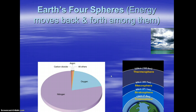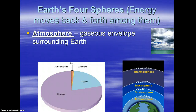Okay, our next section in our notes — now that you know what Earth's system science is and that there are open and closed systems — are the four spheres. There are actually more spheres than four, but you are going to learn the four main ones. The reason why it's called a sphere is because that's what our planet is. Energy will move back and forth among them.